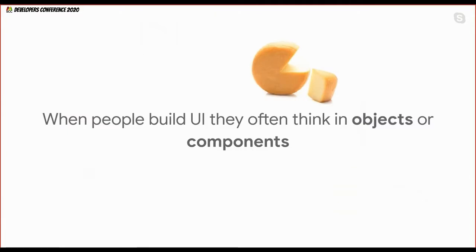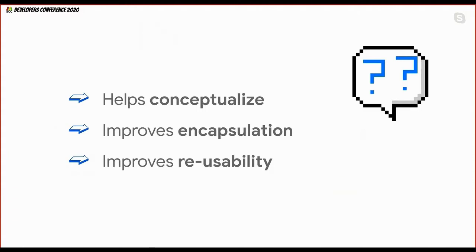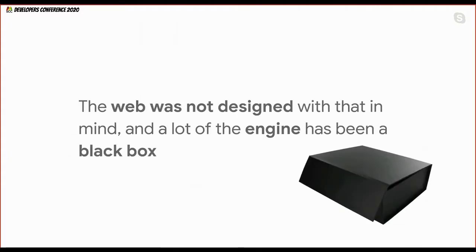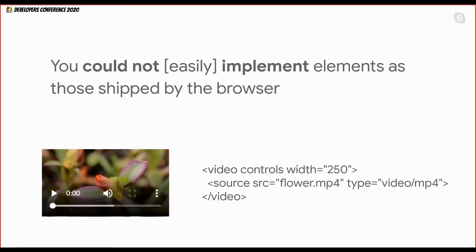When people build UI elements, they often think in terms of objects or components, because that helps conceptualize what you're doing. It improves encapsulation as well as reusability — if you build a button component, you can reuse it across your website or multiple websites. But when the web was designed more than 25 years ago, it was designed for documents — getting text online and linking to different sites. A lot of things have changed. Browser elements have access to things developers don't, making the web engine a kind of black box. It's been very difficult to implement something like the video element, which is actually built using the DOM internally — so why can't developers do that themselves?